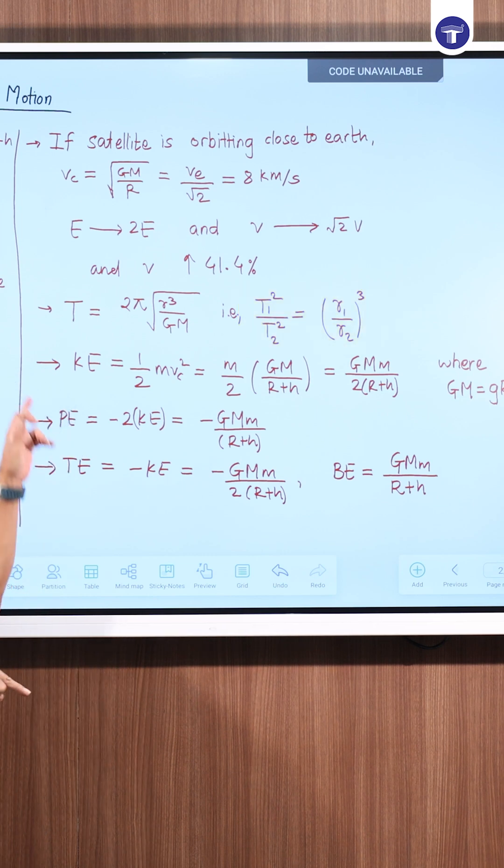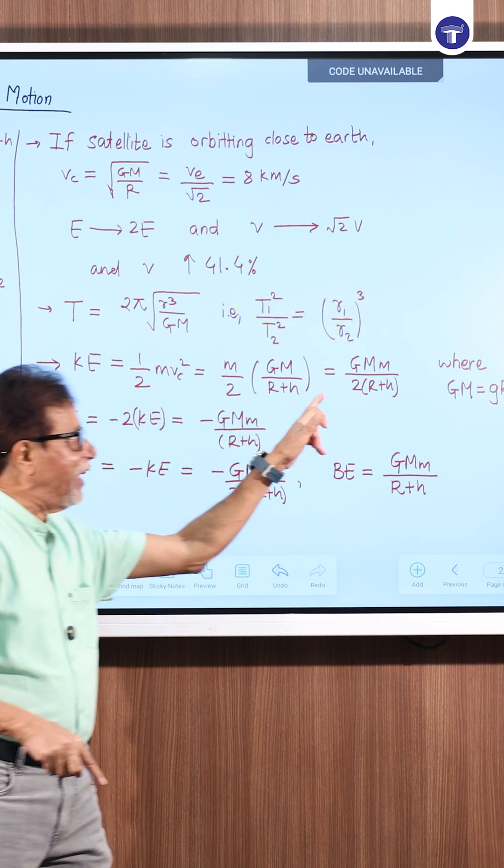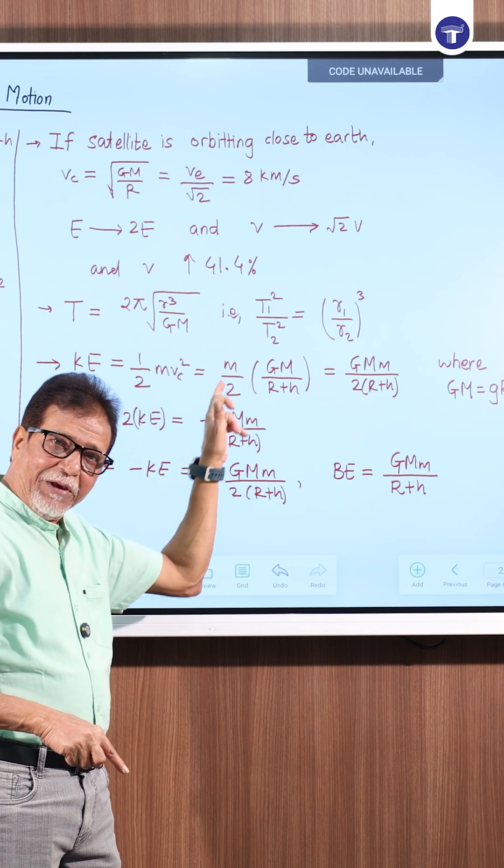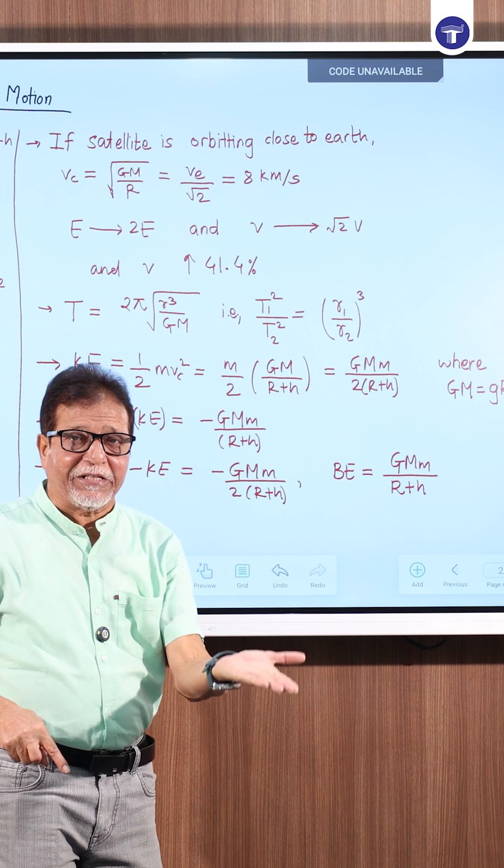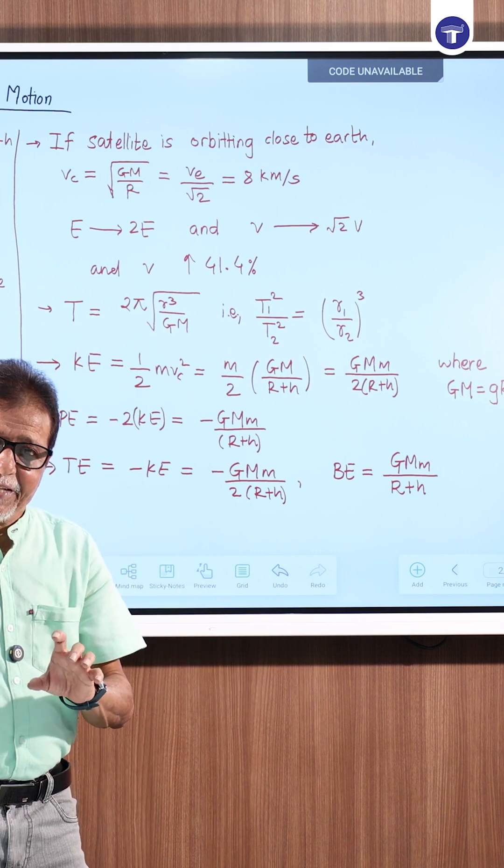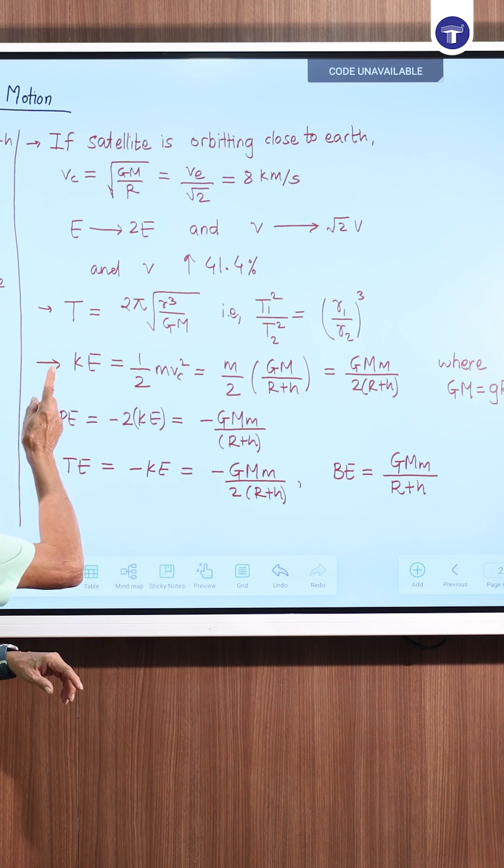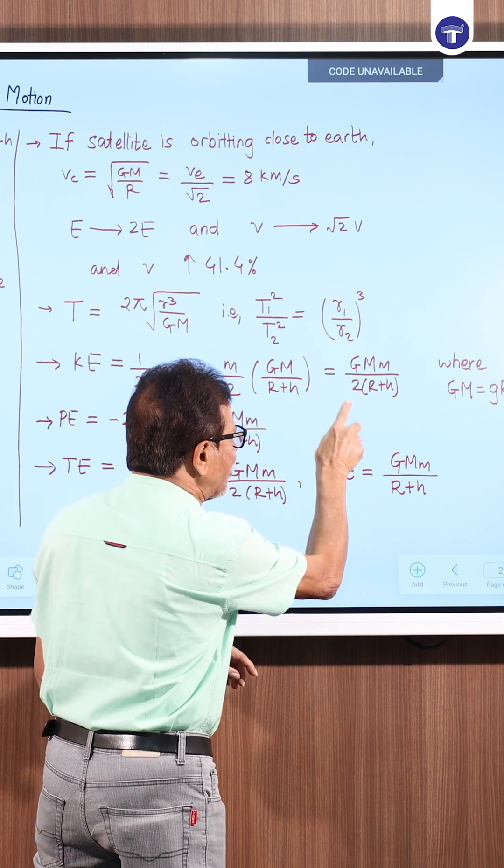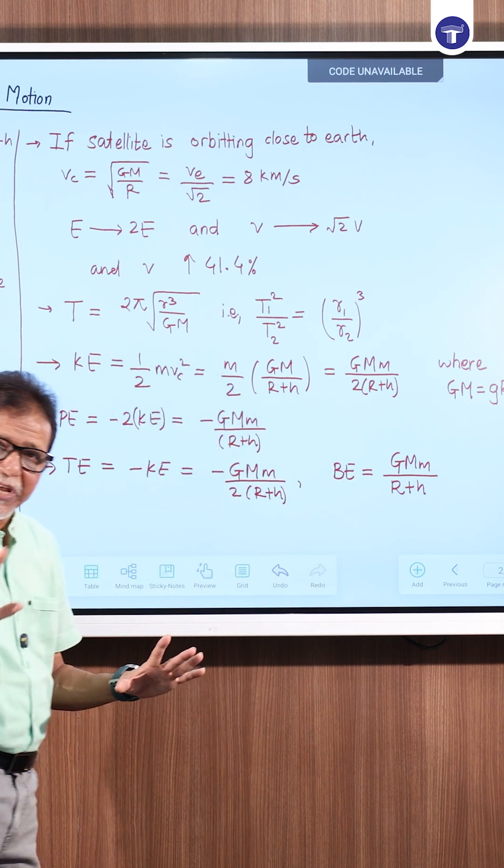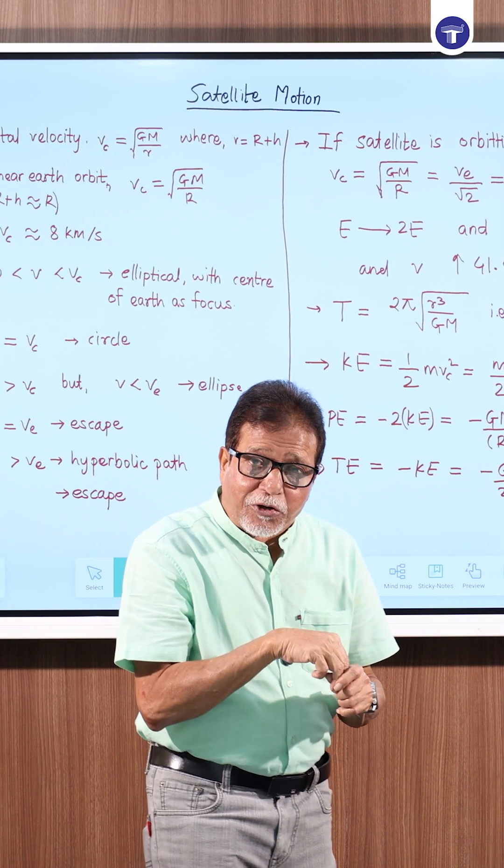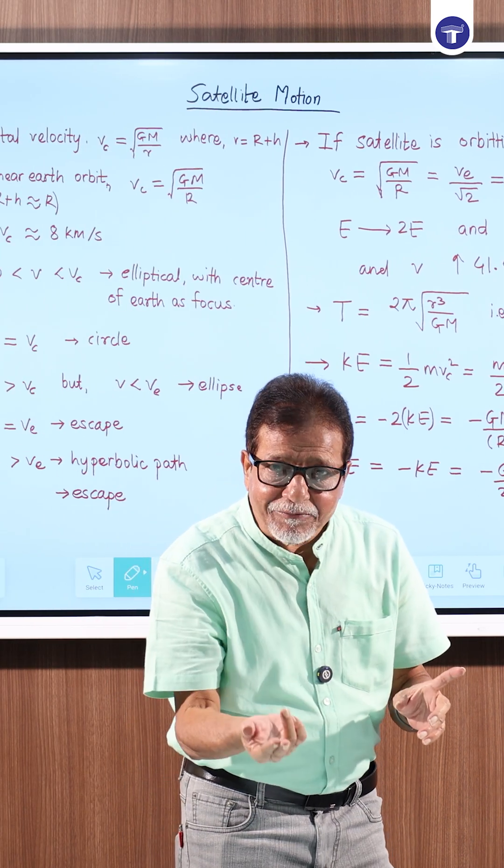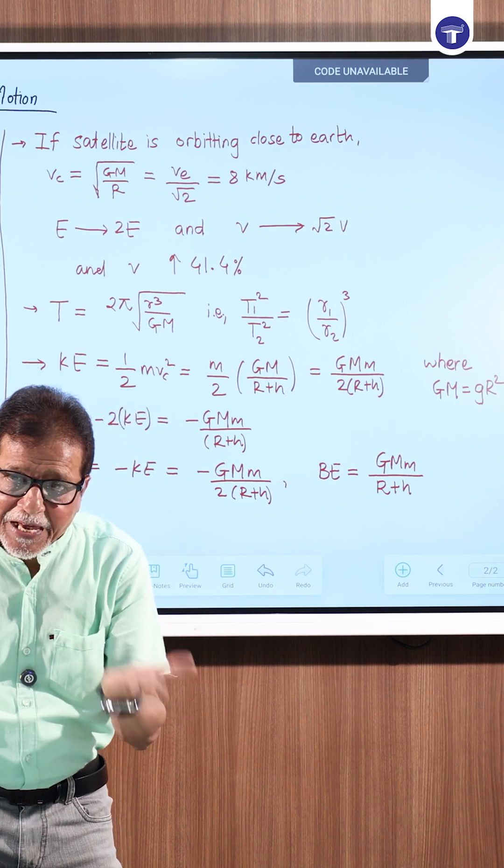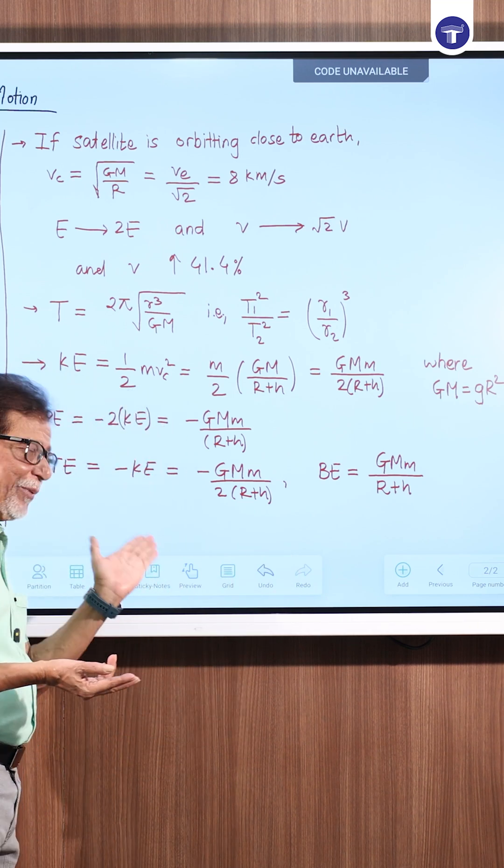If the satellite is orbiting, PE will be twice of KE with negative sign. At height h, kinetic energy is (1/2)mvc² = GMm/(2(r+h)), where GM = gR². Potential energy is twice of KE with negative sign: -GMm/(r+h). Total energy is minus of KE: -GMm/(2(r+h)).